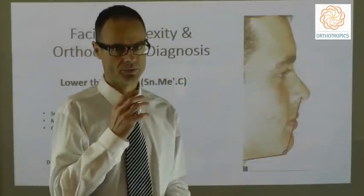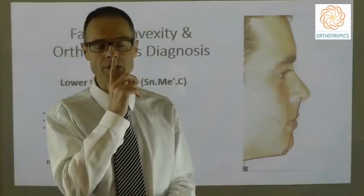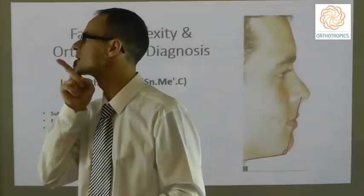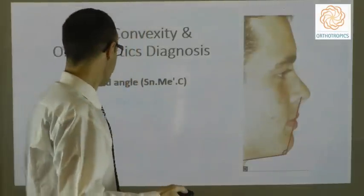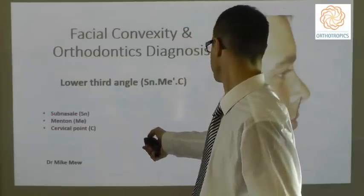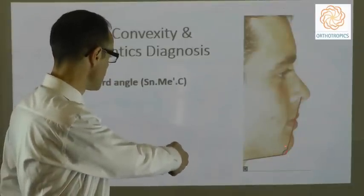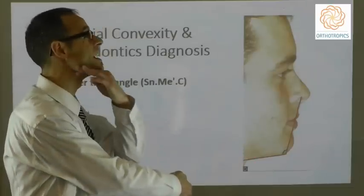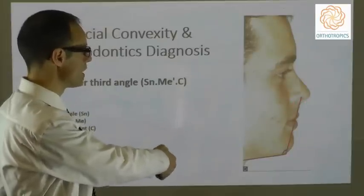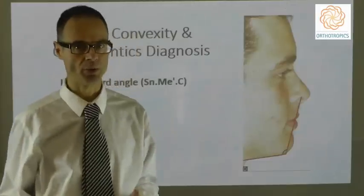The lower third angle is the angle between the mandible looking up to subnasale at the bottom of the nose, assessing how far forward or backward this angle is. The points used are subnasale, menton, and the cervical point. Menton is just below the chin, the cervical point runs along the back — not so well defined. Finding soft tissue menton is not very reproducible, so again this is not an angle that's used commonly within orthodontics.